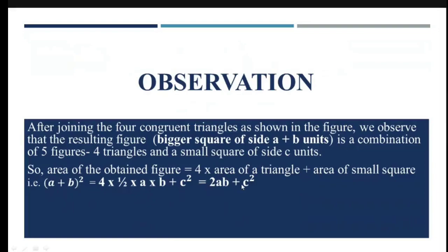So (A + B)² is A² + B² + 2AB = 2AB + C². This 2AB and 2AB cancels out and I am left with A² + B² = C².